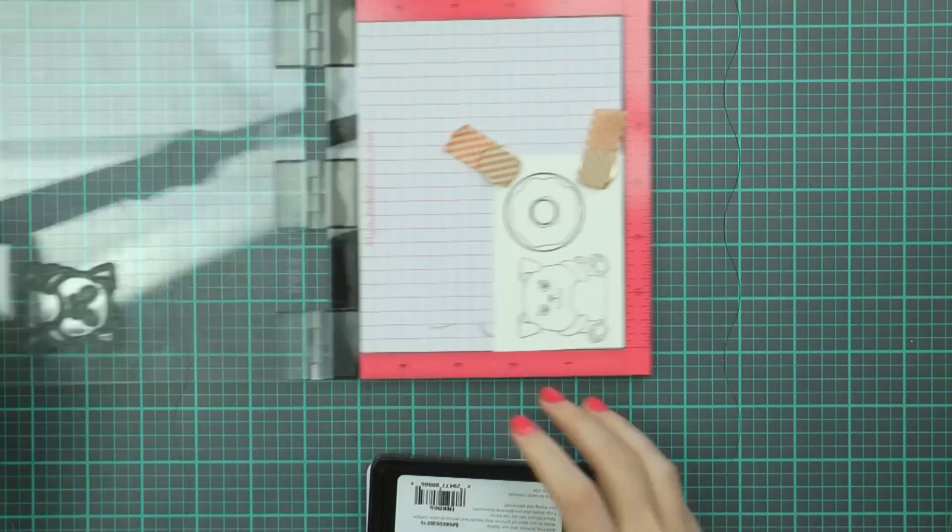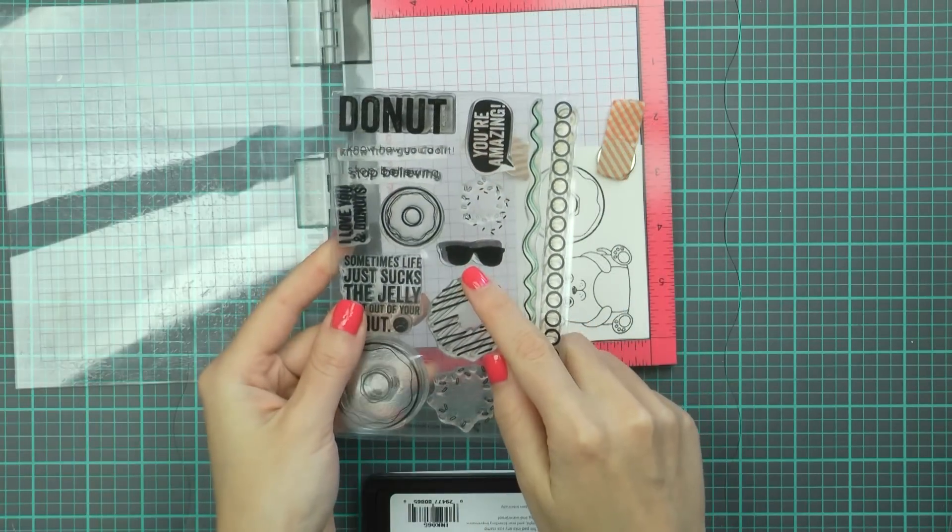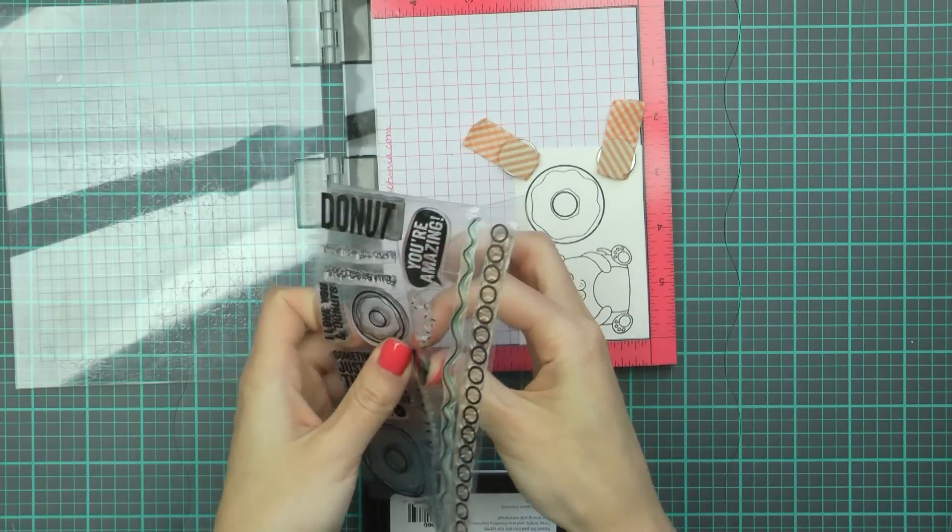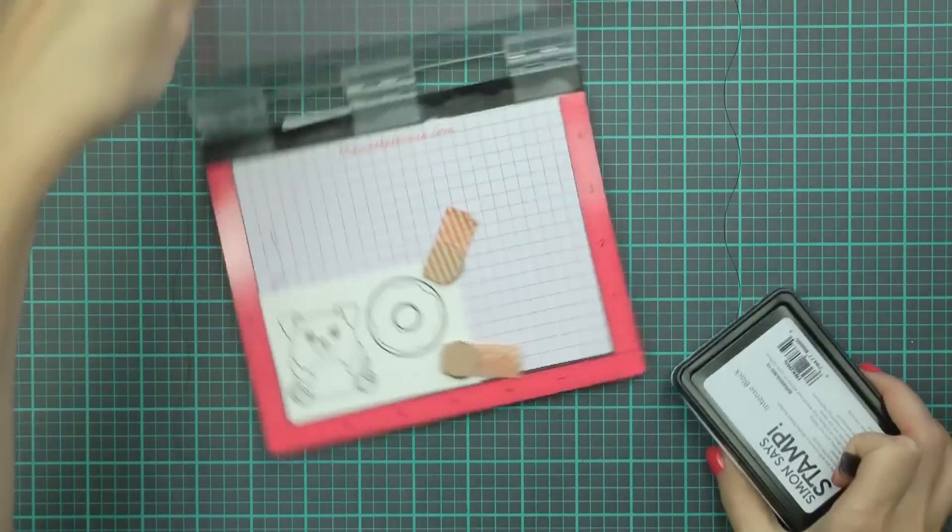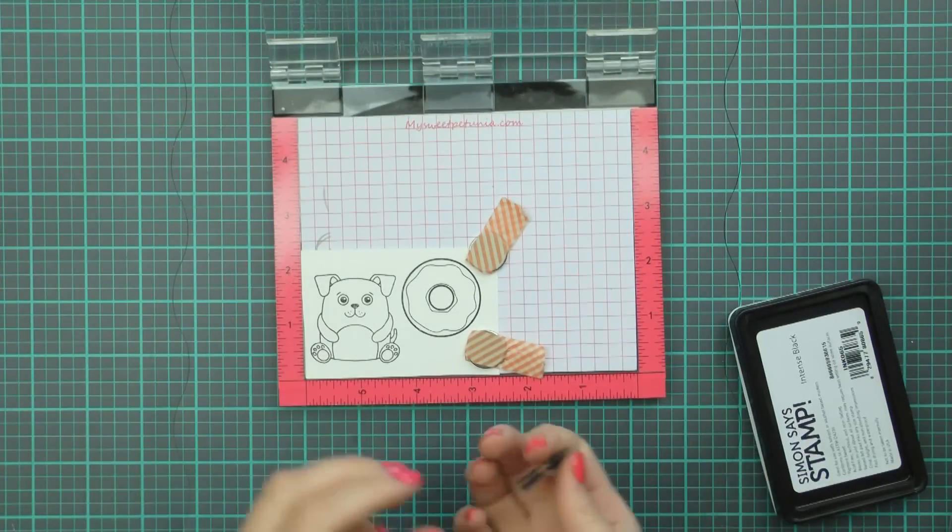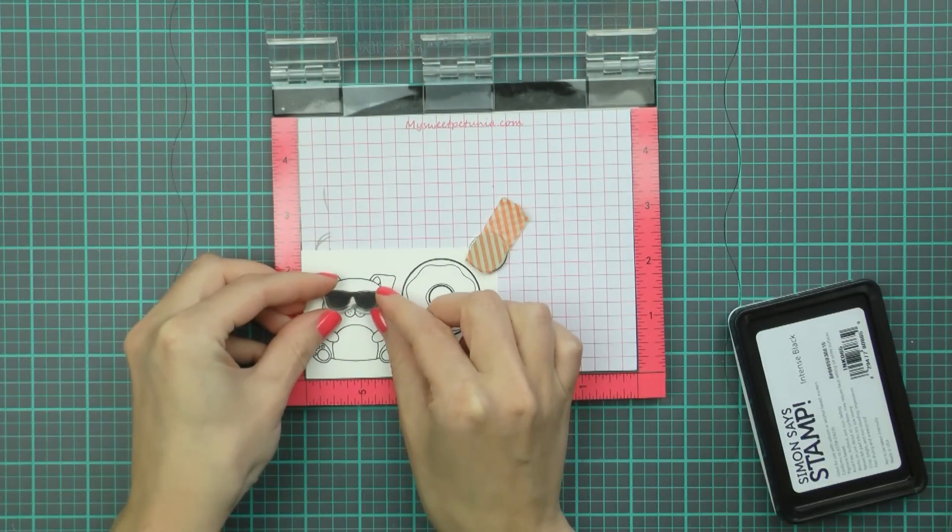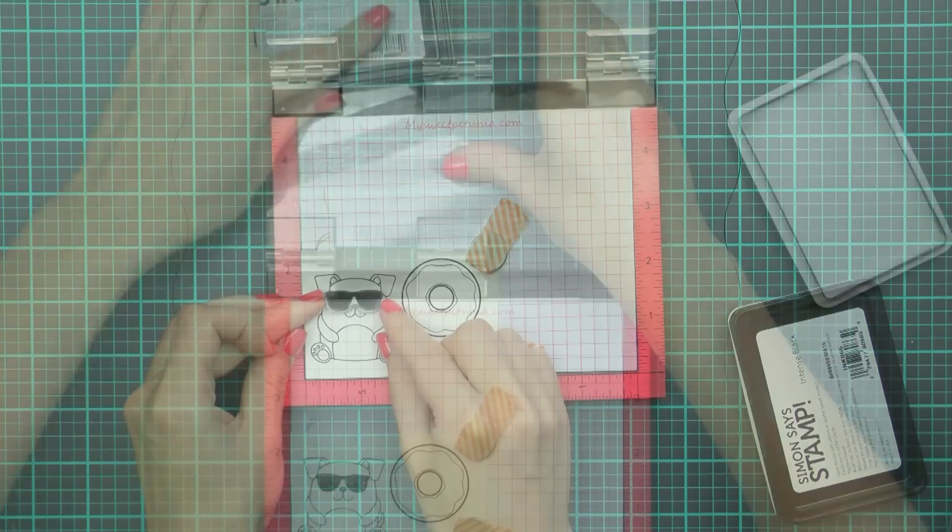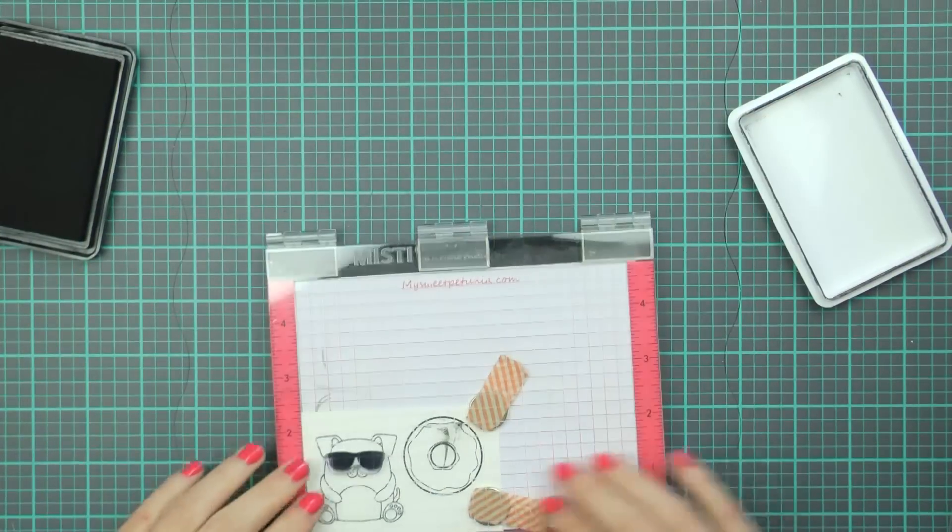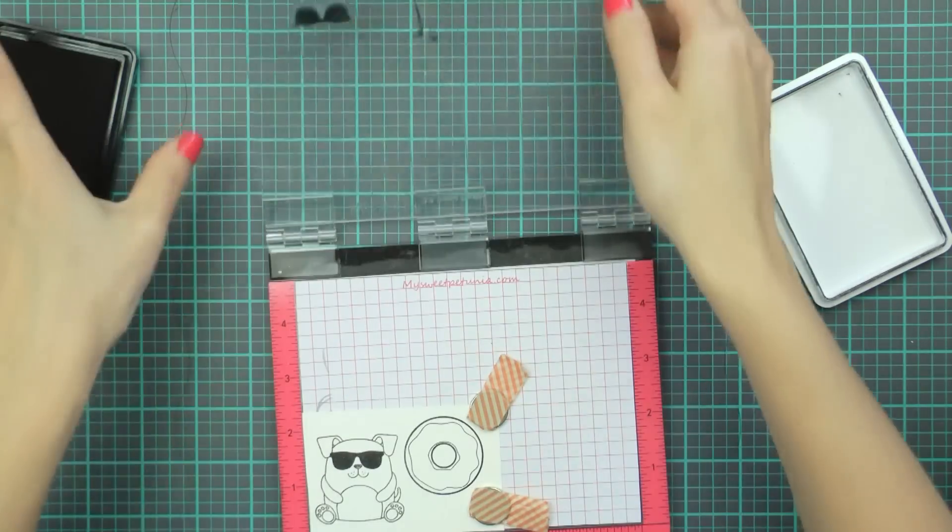Now the donut stamp set has a cool pair of sunglasses and I thought that would look super awesome on the dog, sunglasses would make him look super cool so I'm going to stamp the sunglasses over the puppy and it just adds a fun little accessory for him to wear.